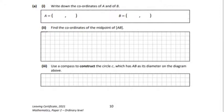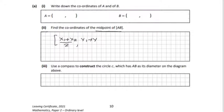We're on to Part 2 now. We need to find the midpoint of AB. The midpoint formula is x₁ plus x₂ all over 2, and y₁ plus y₂ all over 2. Let's put our coordinates together.